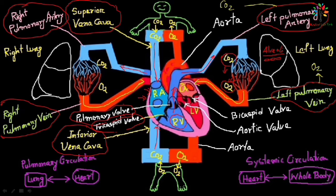Once the left atrium is filled, there will be contraction of the left atrium. There is a valve in between the left atrium and left ventricle known as the bicuspid valve — it is called the bicuspid valve because it has two cusps or two flaps. Blood from the left atrium after contraction reaches the left ventricle through the bicuspid valve. The bicuspid valve only allows blood to flow in one direction — from the left atrium to the left ventricle, not back.